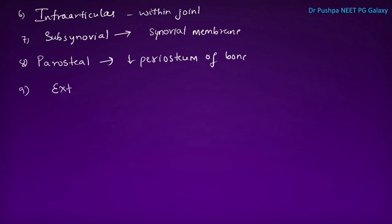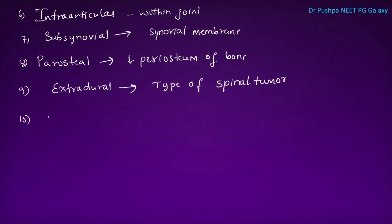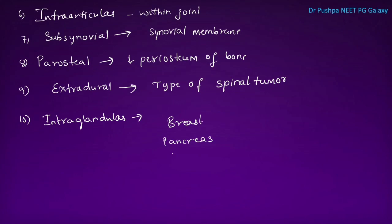Extradural lipoma is a type of spinal tumour. We do not find intracranial lipoma because there is no fat within the skull. Intraglandular lipoma is present in glands — usually seen in three types: breast, pancreas, and under the renal capsule.